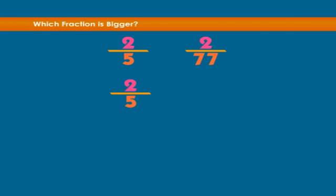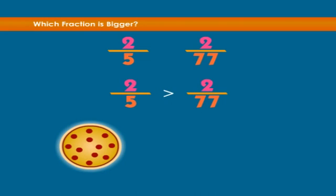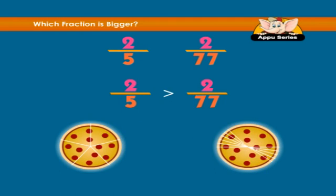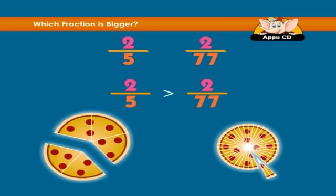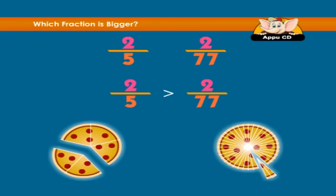One more: two fifths or two seventy-sevenths? Two fifths is a lot bigger. The reason is simple — one pizza is cut into five pieces and the other into seventy-seven, so you want to get two pieces from the pizza cut into five. Two fifths is greater.